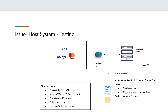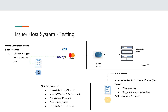After doing a round of this testing — which can be done with test plastic — there is a separate online certification testing which the schemes themselves perform by connecting to the issuer's host system. The schemes trigger all the transactions in the test plan directly to the transaction switch and certify whether the issuer can successfully process all those transactions. These two steps — pre-certification done by the issuer and online certification performed by the schemes — are involved in the issuer host system testing.